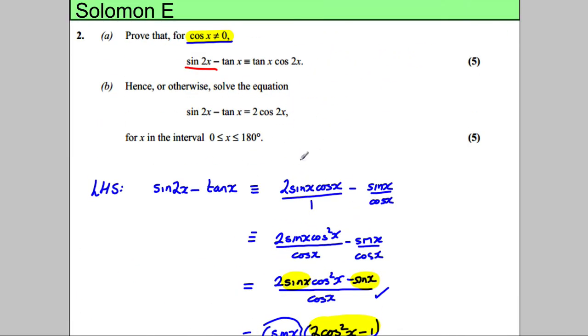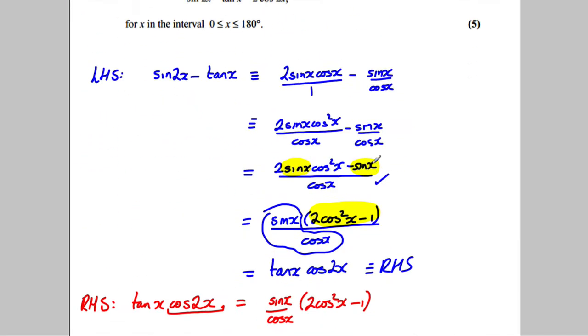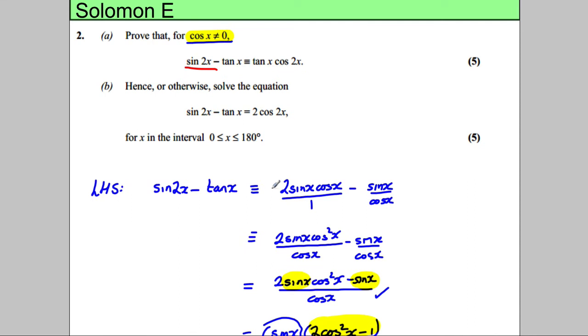So, sine 2x subtract tan x, which is what we were starting with. So, basically, it was just the reverse process. I think the way I chose was probably the easiest. Then, for part b. So, let's take a little snapshot of this.